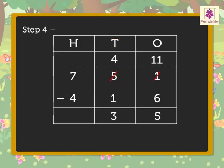Step 4. Subtract the hundreds, that is 7 minus 4 is equal to 3. Write 3 in the hundreds column. Yippee! We get the answer as three hundred thirty-five. Seven hundred fifty-one minus four hundred sixteen is equal to three hundred thirty-five.